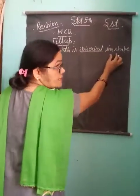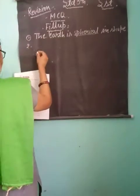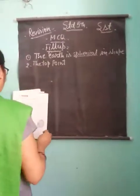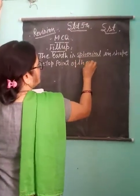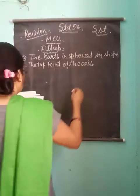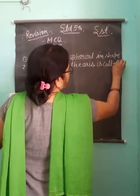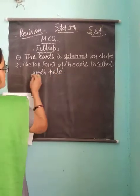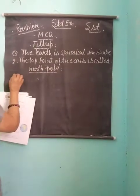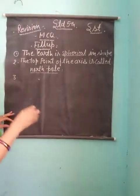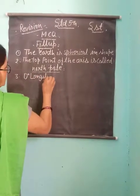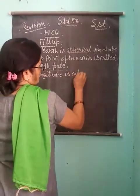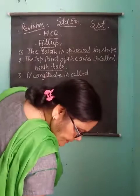The top point of the axis is called the North Pole. Zero degree longitude is called the Greenwich Meridian.